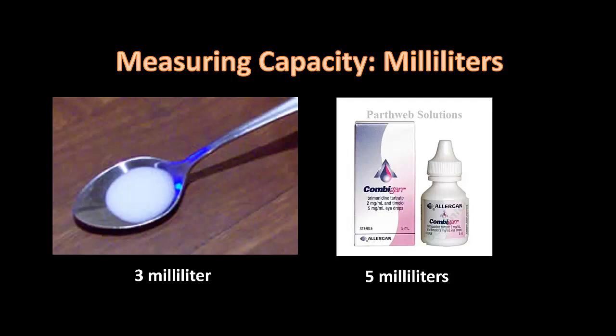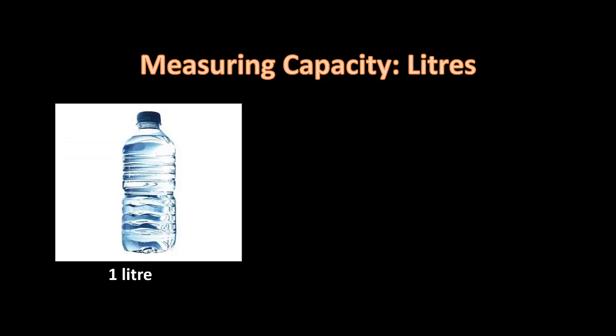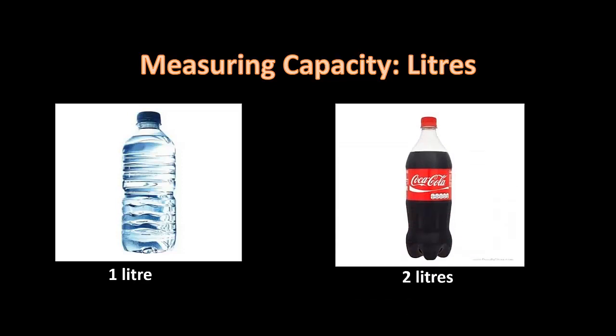Now imagine you have a bottle of water in front of you and you want to know how much water is in it. We use a bigger unit, because if we used milliliters it would be too much. So we're going to be using liters. This small bottle of water would be like one liter, and if you prefer Coke, this bottle of Coke would be around two liters.